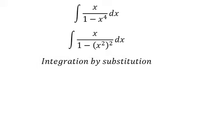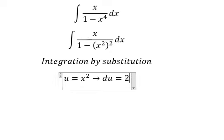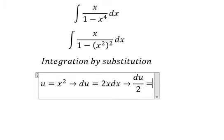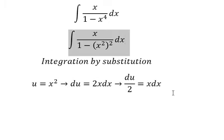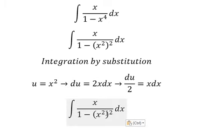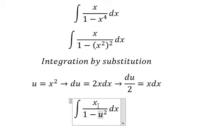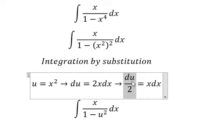So I will put u equal to x squared. Later we do first derivative for both sides and we have 2x dx. Because we don't have number 2 in here, we need to divide both sides by number 2. This one we change by u, x dx we change by this one.